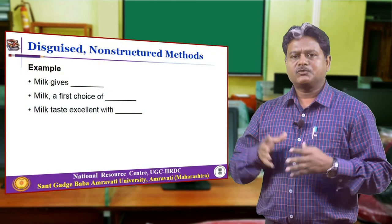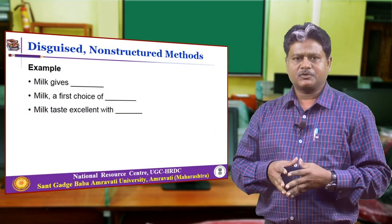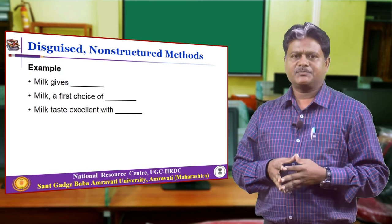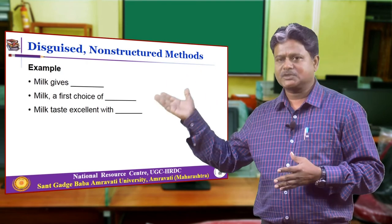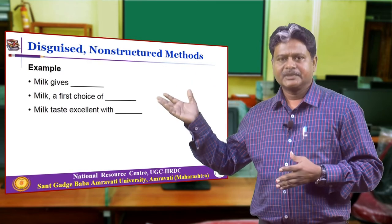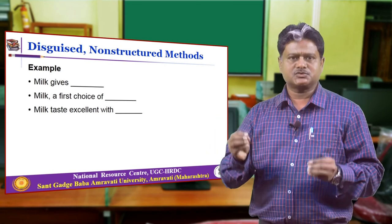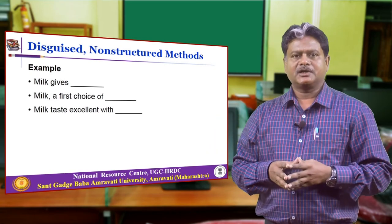For example, if you want to explore details about milk as a product, you can use this type of test with prompts like 'milk gives,' 'milk — a first choice of,' or 'milk tastes excellent with.' Depending upon the respondent's ideas, they will try to associate one or two words with these given prompts.